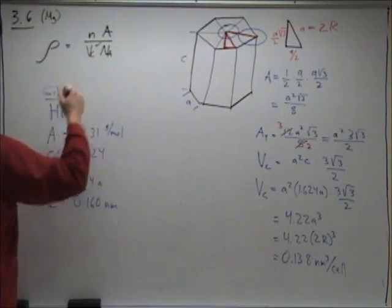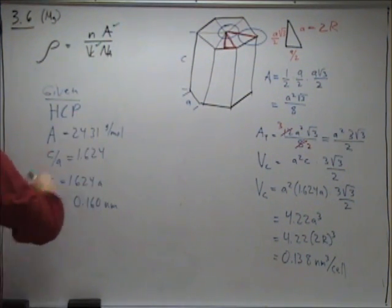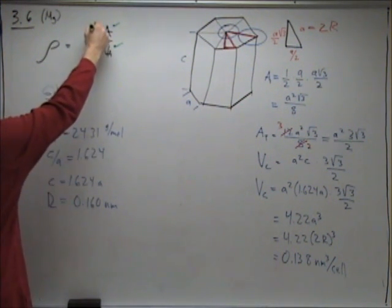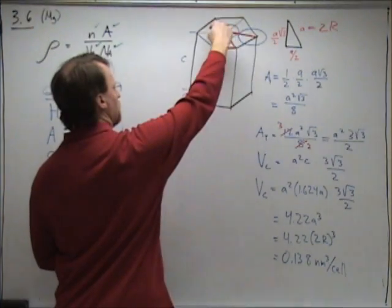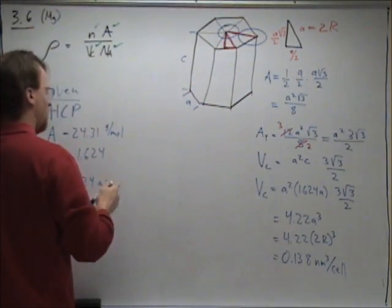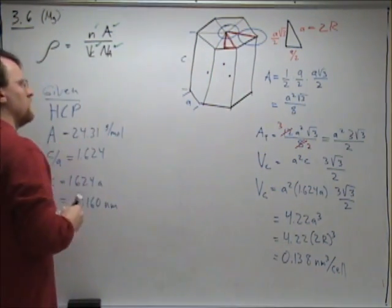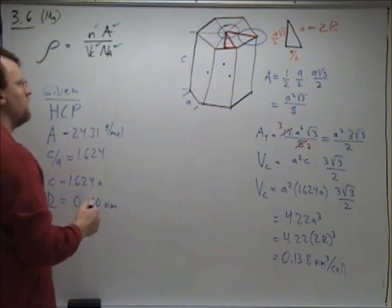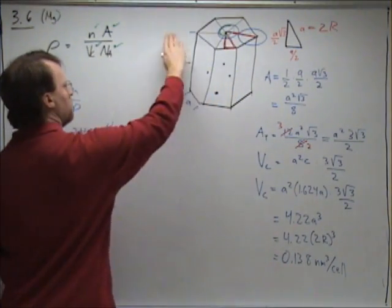Now that we have the volume of the cell, that's the tough part. We have the atomic mass, we have Avogadro's number. The last thing we need is the number of atoms within the cell. The hexagonal close-packed doesn't just have atoms on the top face or the bottom face; there are also three fully enclosed within the cell structure. So we have one on top and one on bottom, each of those cut in half.